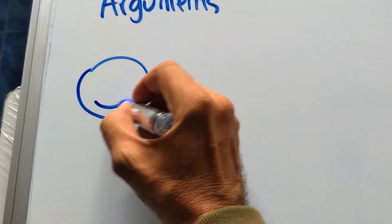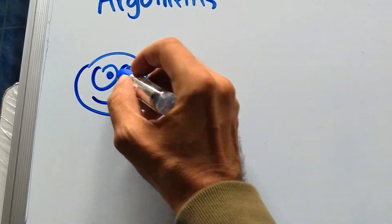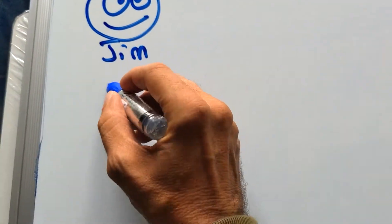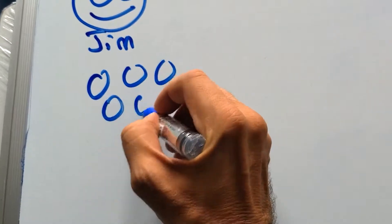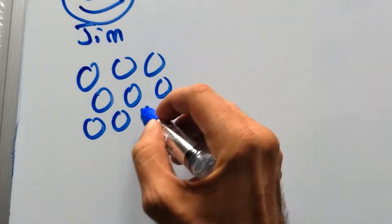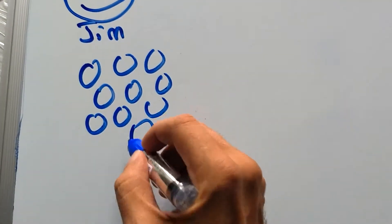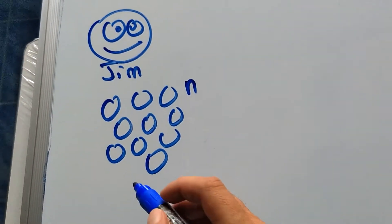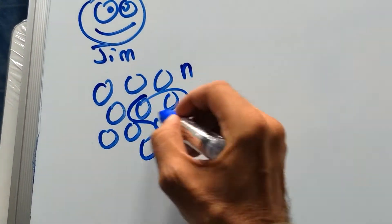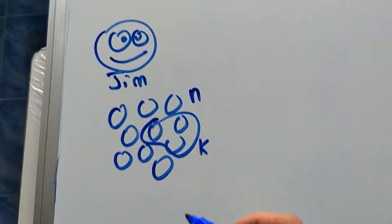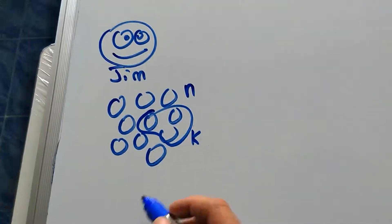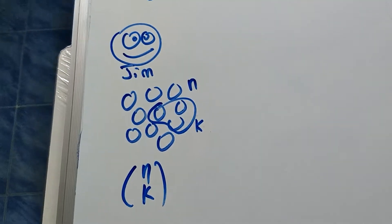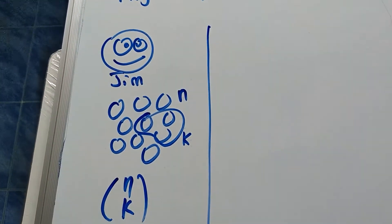Jim is going to count these — there are N of them. He's going to choose K of them, and he counts in a very straightforward way like we saw last time: N choose K. That's how many ways. That's Jim's approach.